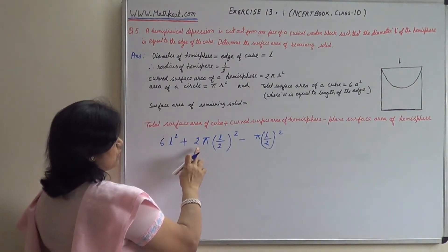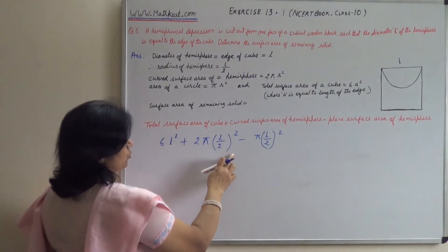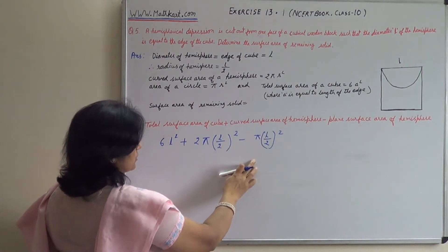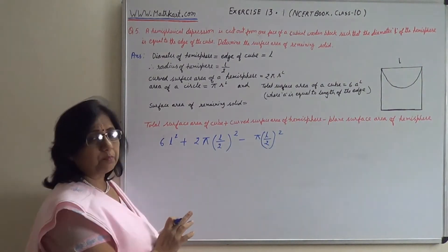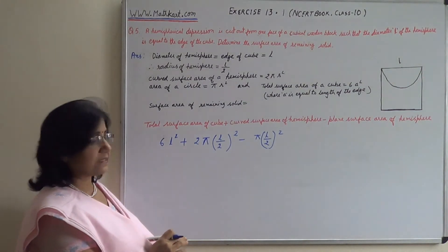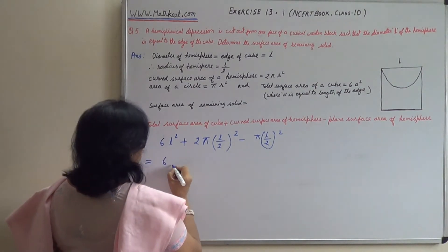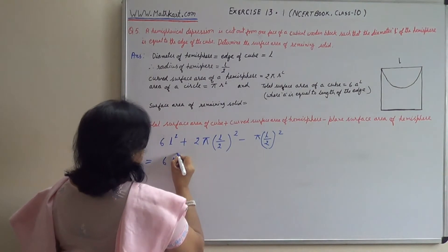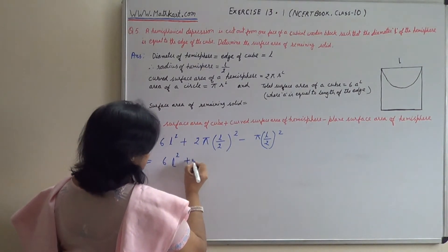2 pi L upon 2 whole squared minus pi L upon 2 whole squared leaves us with pi L upon 2 whole squared. This becomes 6 L squared plus pi L squared upon 4.